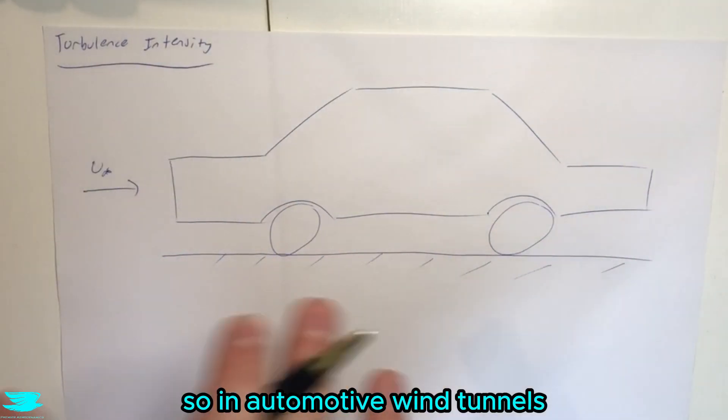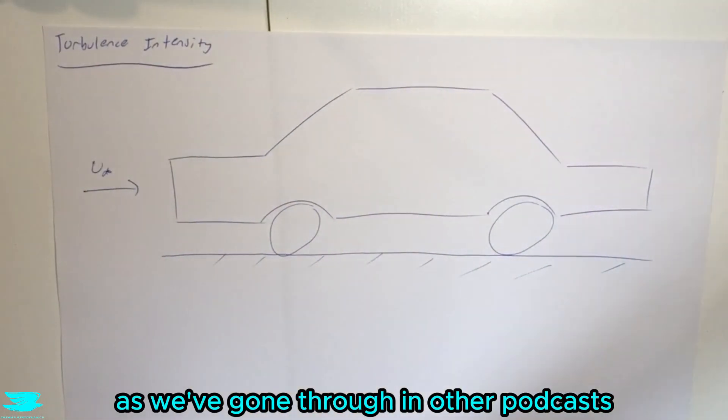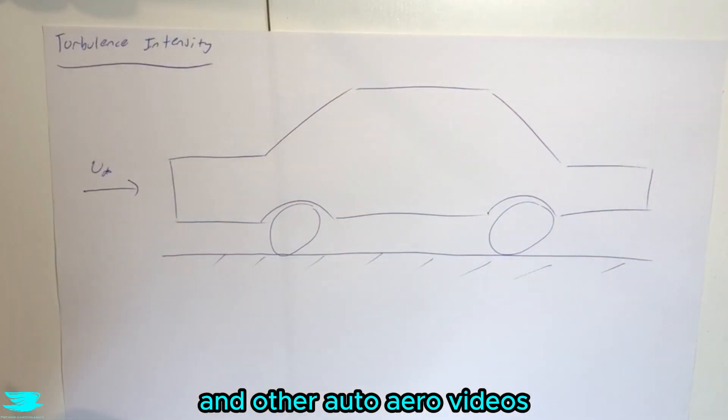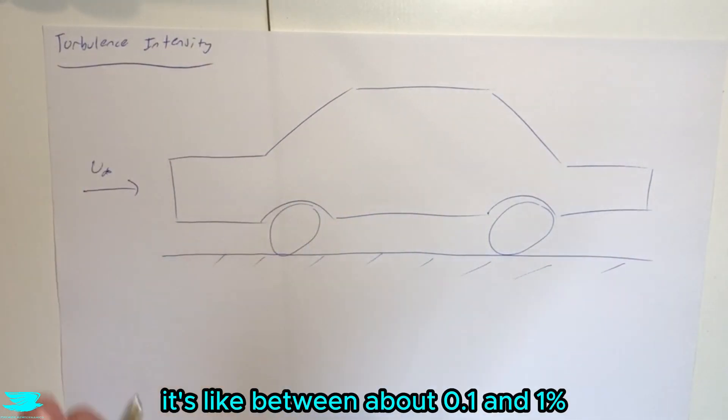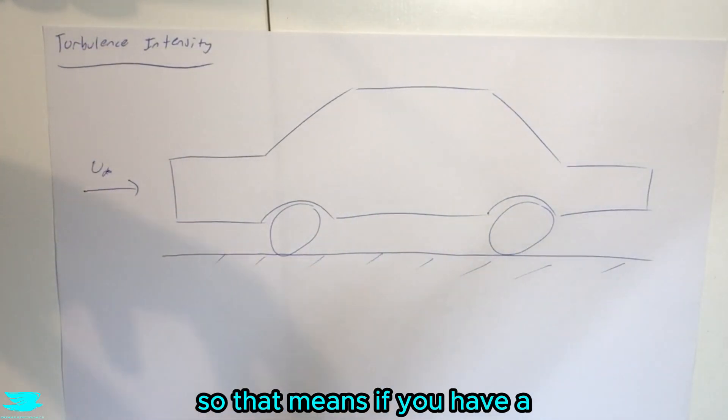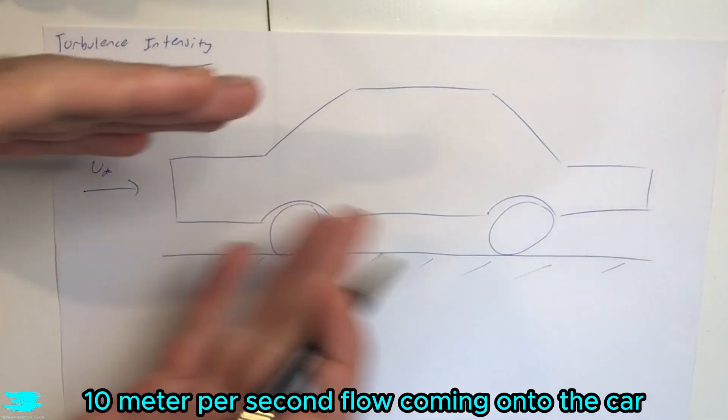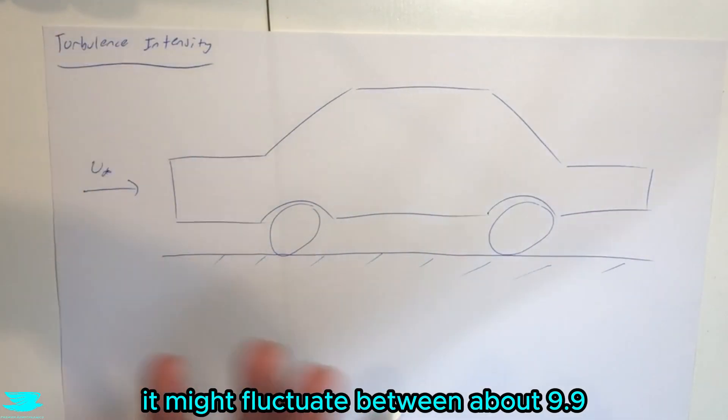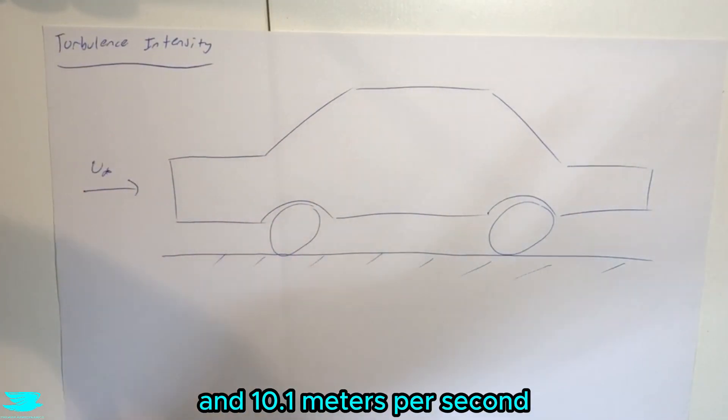So in automotive wind tunnels, as we've gone through in other podcasts and other auto aero videos, the turbulence intensity is usually quite low. It's like between about 0.1 and 1%. So that means if you have a 10 meter per second flow coming onto the car, it might fluctuate between about 9.9 and 10.1 meters per second. It's almost nothing.